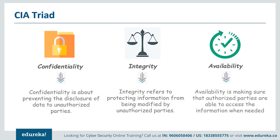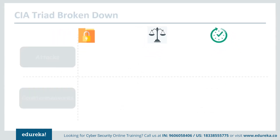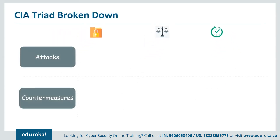The final component of the CIA triad is availability — the assurance that systems and data are accessible by authorized users whenever they need it. If we cannot access the data whenever we need it, we are definitely not secure. Now let's take a look at what kind of attacks can be made on the CIA triad in the real world and how we can mitigate them.